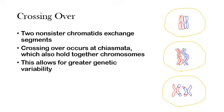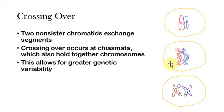Now, before we get into how meiosis works, there's one important process within meiosis that really has a strong effect on how it functions. This is known as crossing over. Crossing over gets its name from the way it looks — you can kind of see that it just looks like it's crossing over.